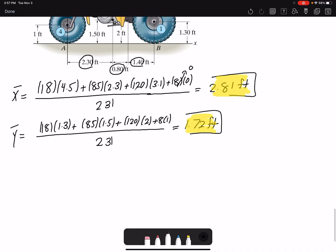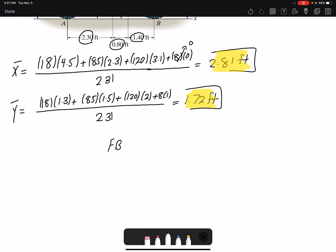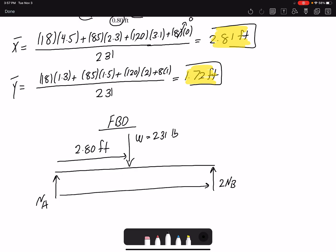The second part wants us to find the reaction forces. So we need to draw the free body diagram. Here in this free body diagram, because we found the center of gravity, then we can apply the weight where the center of gravity is. So I have two wheels here, 2 NB and then here NA. And I have the weight, which the magnitude is 231 pounds, being applied 2.8 feet away. The total distance here is 4.5. So in this free body diagram, I have two unknowns, NB and NA.